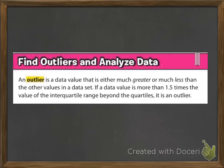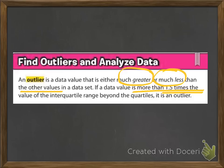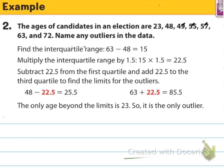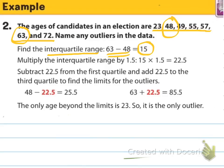An outlier is a data value that's either much greater or much less than the other values in the data set. If a data value is more than 1.5 times the interquartile range beyond the quartile, it is an outlier. Example 2: the ages of candidates in an election are 23, 48, 49, 55, 57, 63, and 72. They want us to name any outliers. To find outliers mathematically, we subtract the two quartiles to get the IQR = 15 (already provided for us here).